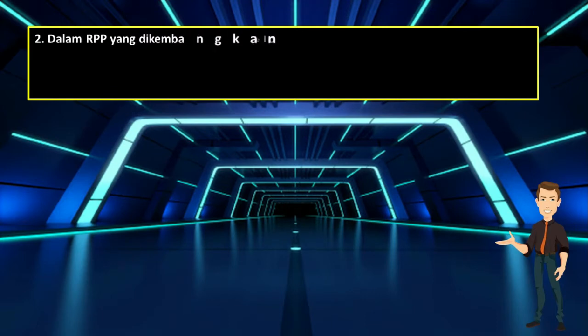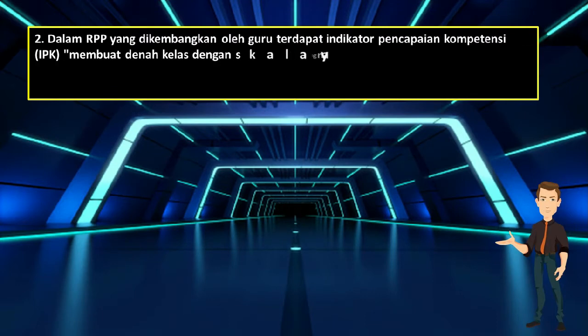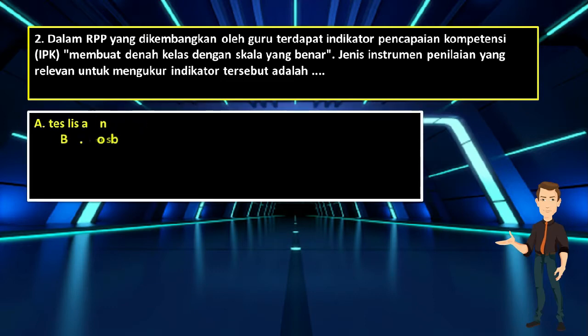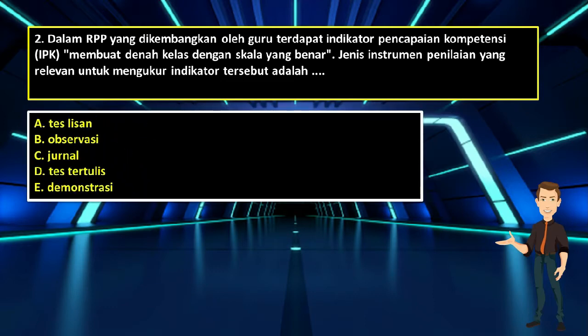Soal nomor 2. Dalam RPP yang dikembangkan oleh guru terdapat indikator pencapaian kompetensi: Membuat denah kelas dengan skala yang benar. Jenis instrumen penilaian yang relevan untuk mengukur indikator tersebut adalah: A. Tes lisan; B. Observasi; C. Jurnal; D. Tes tertulis; E. Demonstrasi. Jawabannya adalah B: Observasi.